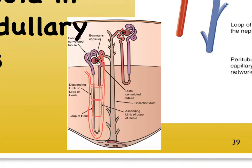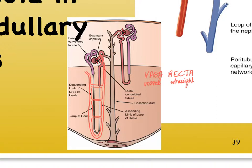We refer to this capillary bed as the vasa recta. If you translate that, vasa refers to vessel, recta referring to straight — think of rectus abdominis, referring to your muscles in the abdominal area where the fibers run straight up and down. So this is a capillary bed that wraps around our loop of Henle, and it looks like straight tubes that are interconnected. This vasa recta plays a very crucial role in helping the juxtamedullary nephron create concentrated urine.